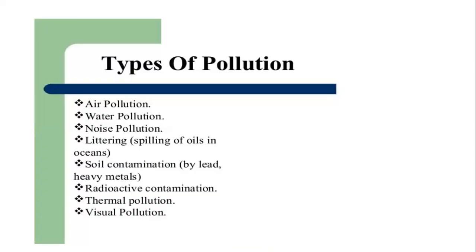The types of pollution are: air pollution, water pollution, noise pollution, littering, spilling of oils in oceans, soil contamination by heavy metals, radioactive contamination, thermal pollution, and visible pollution. These are the types of pollution. First we discussed about pollution, then about the pollutant, and there are different types of pollution. Next, we go through the topic of air pollution.